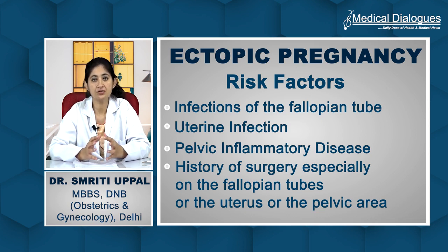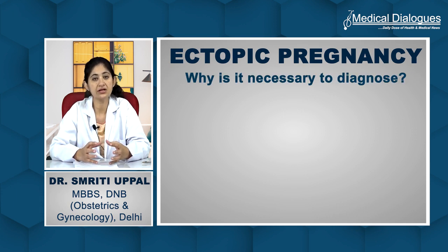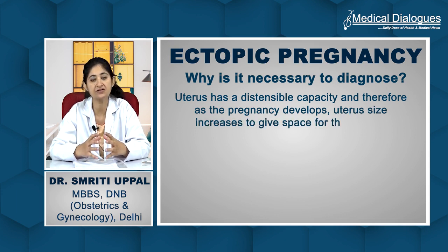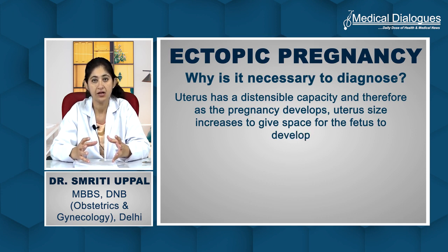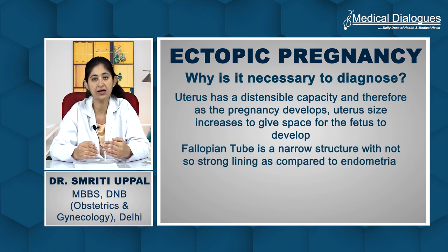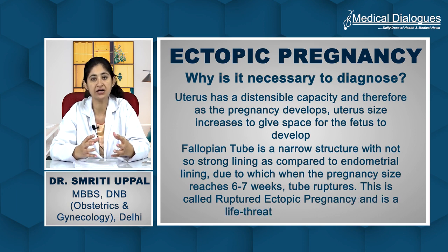Due to surgery, the motility of the tubes gets damaged — they adhere to surrounding structures, and the fertilized egg cannot move from inside the tube to the uterus. That is why the fertilized egg implants in the tube itself. Since the tube is a narrow structure, its lining is not as strong as the uterine lining, and when the pregnancy reaches 6 to 7 weeks, the tube will rupture — what we call a ruptured ectopic pregnancy — which is a life-threatening emergency.